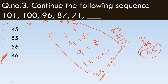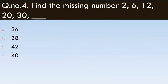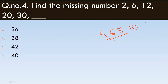Next question: find the missing number in the sequence 2, 6, 12, 20, 30. Looking at the differences: 6 minus 2 is 4, 12 minus 6 is 6, 20 minus 12 is 8, 30 minus 20 is 10. The differences are 4, 6, 8, 10, so the next difference is 12. Therefore the answer is 42.